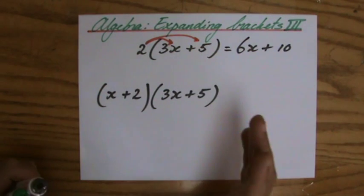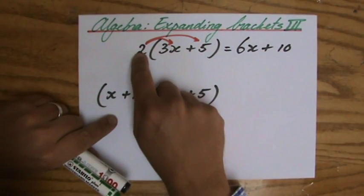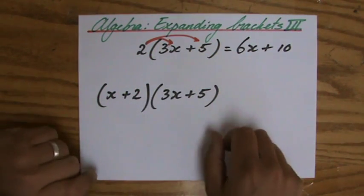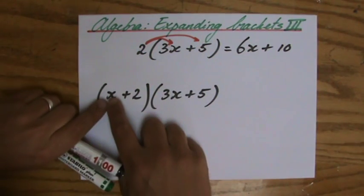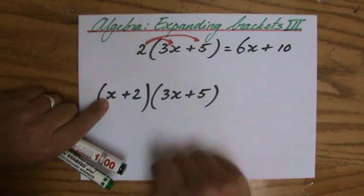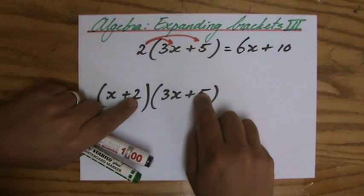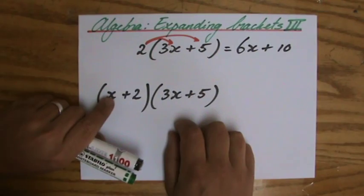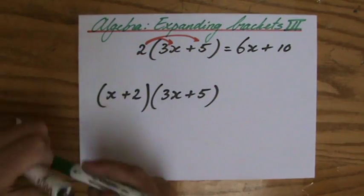It follows a similar pattern. Before I did 2 times 3x and 2 times 5. I'm going to do a similar thing here — multiply these two terms by these two terms. So x times 3x and x times 5, then 2 times 3x and 2 times 5. First for x and then for 2.